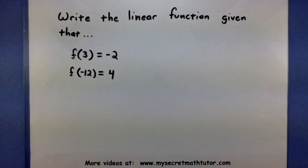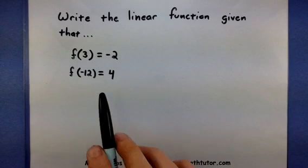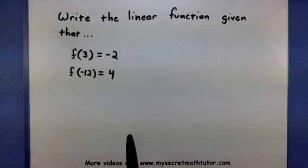Welcome. In this example, we want to write the linear function given that f(3) = -2 and f(-12) = 4. This will basically look like writing the equation of a line that goes through two points, but we don't want the notation to mess us up.